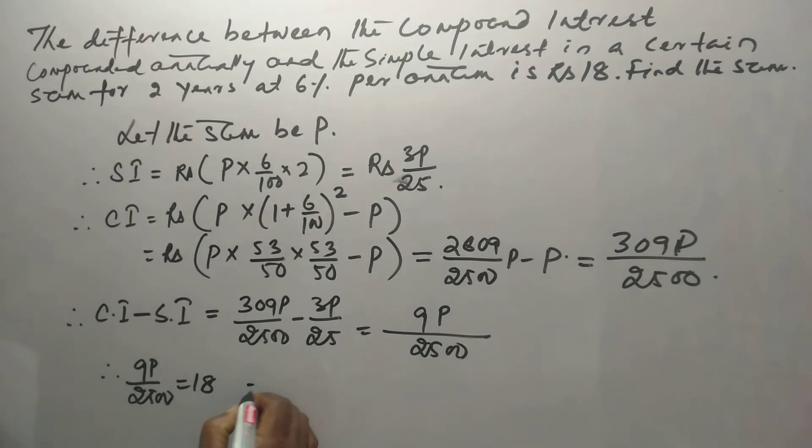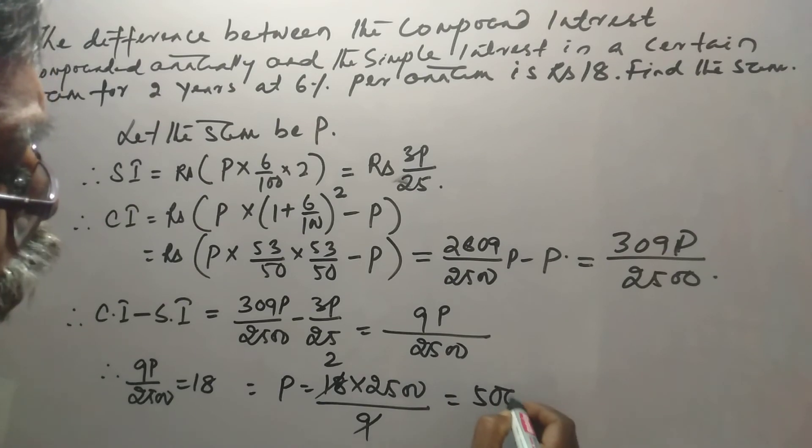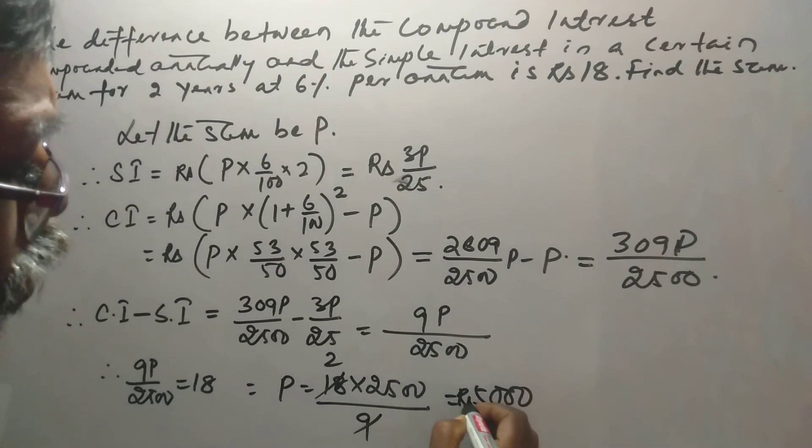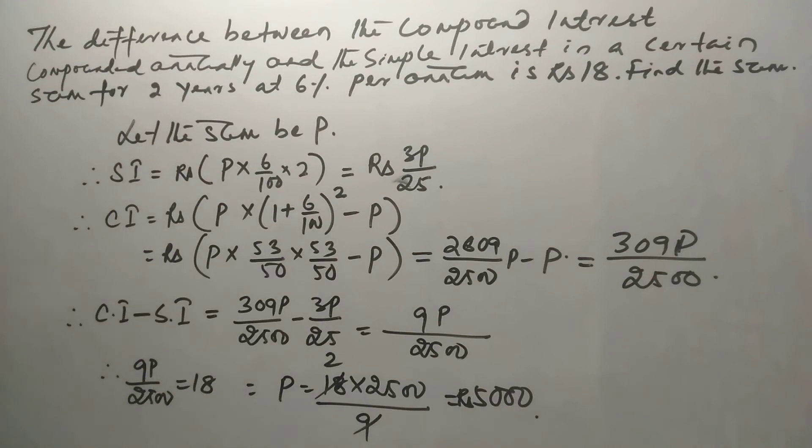So P is equal to 18 into 2500 divided by 9, which gives us 5000 rupees, the answer.